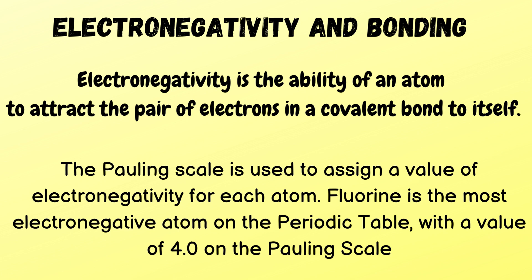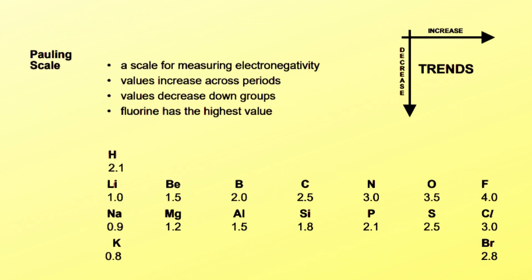Fluorine is the most electronegative atom on the periodic table and it has a value of 4 on the Pauling scale. This scale is used for measuring electronegativity, and the values increase across periods and decrease down groups. You can see fluorine has the highest value of 4.